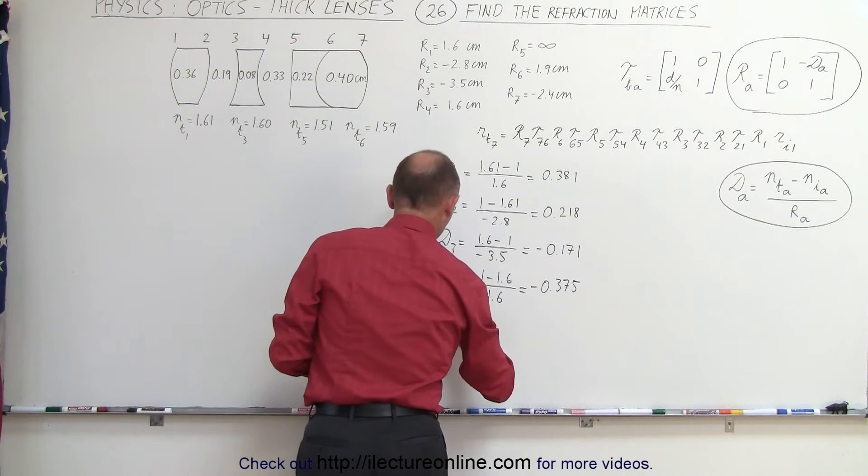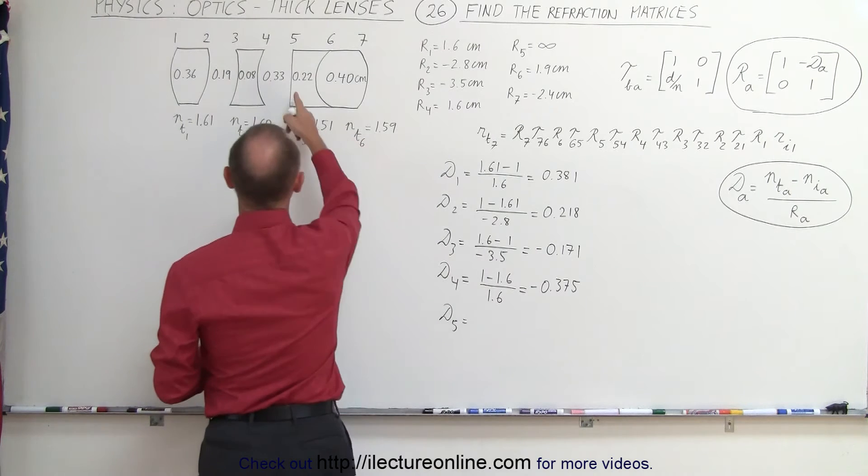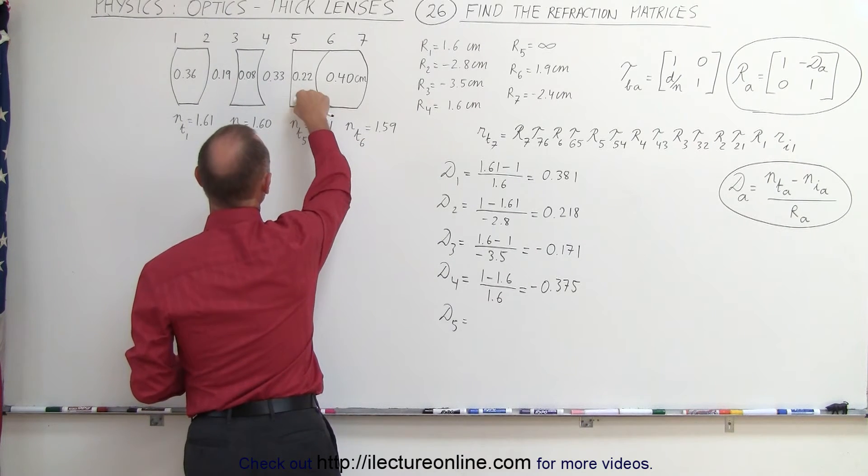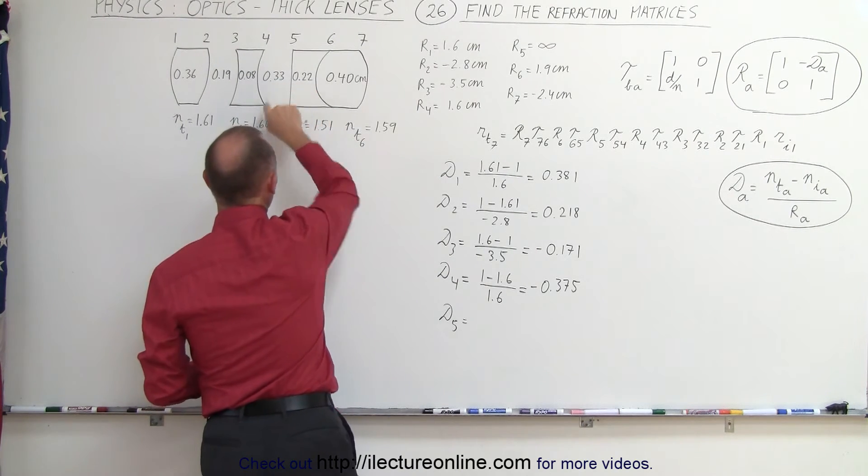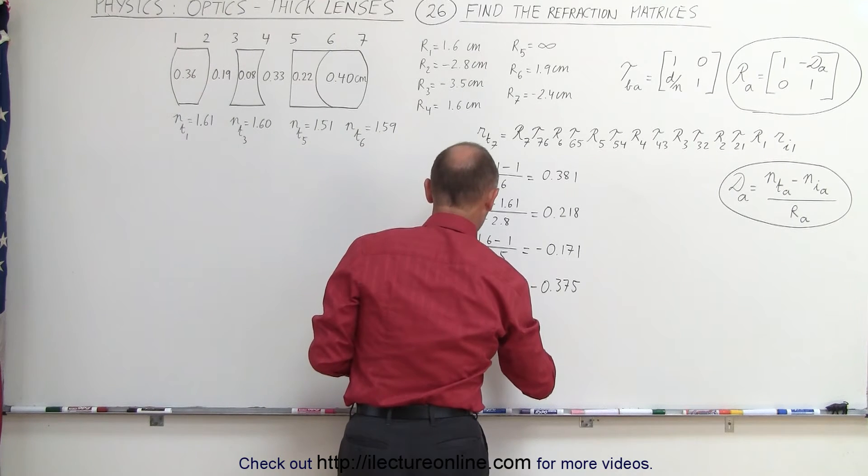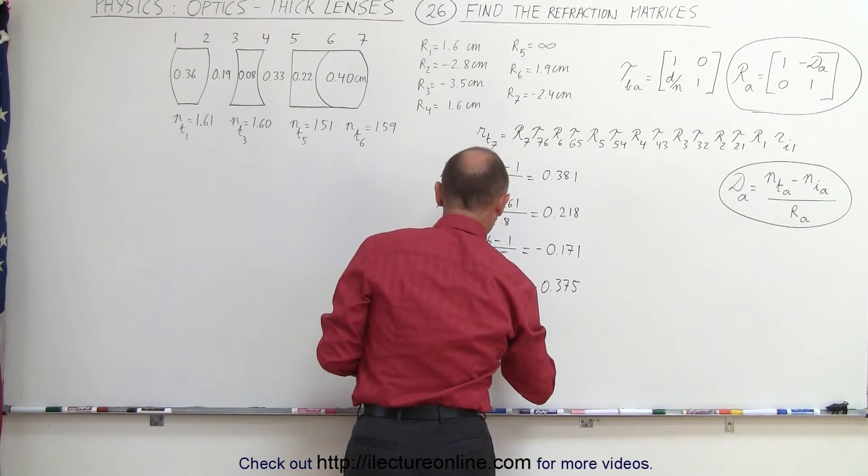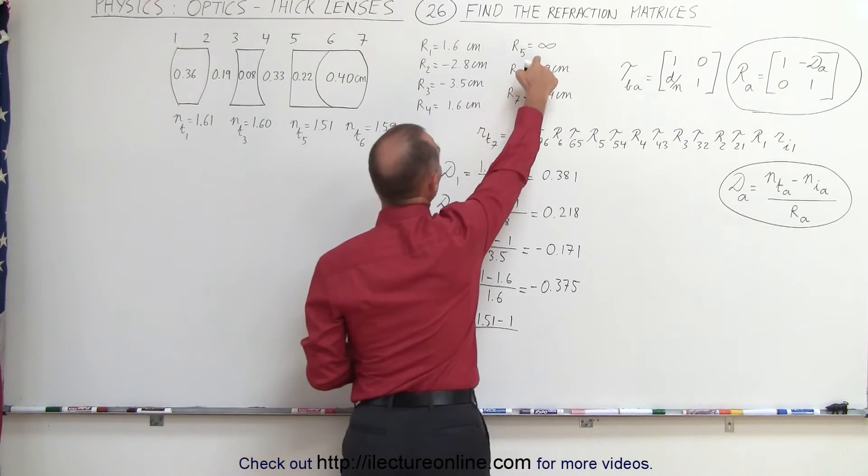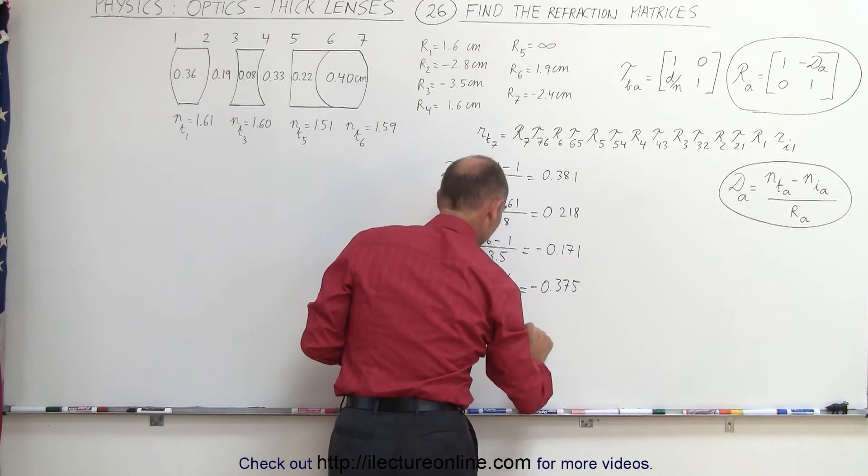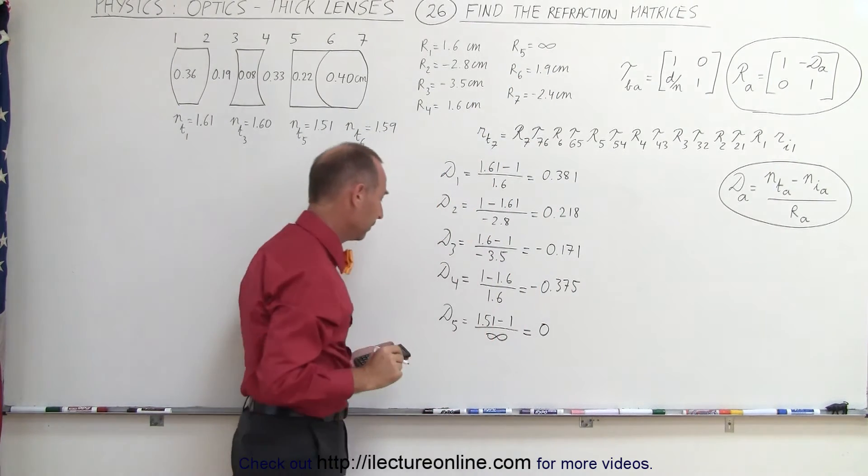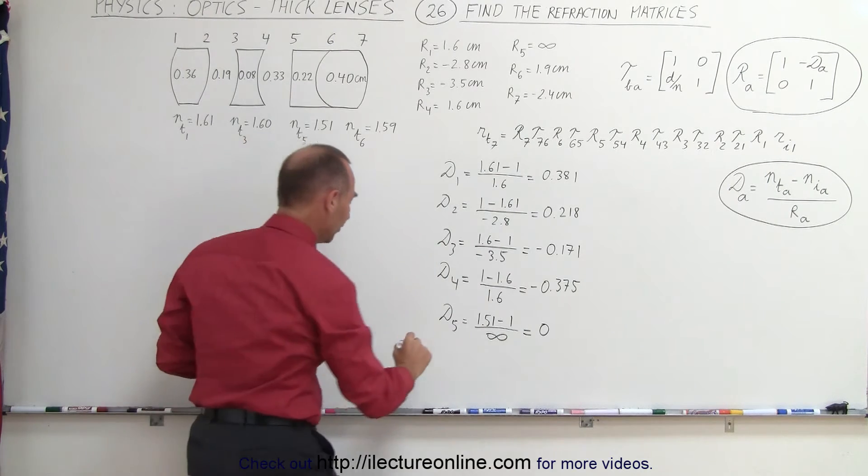Next, we go to d5. And that's across this boundary, so it'll be the index of refraction of this lens minus air, 1.51 minus 1 divided by the radius of curvature, which in this case is infinite, which makes it zero power. Okay, moving on to d6.